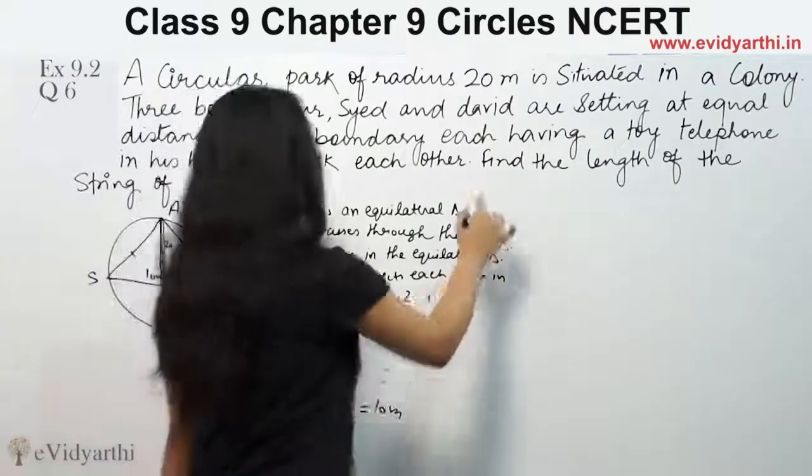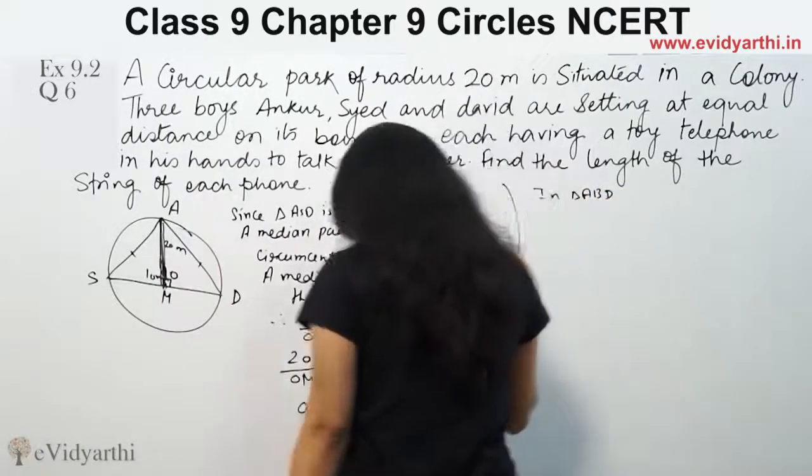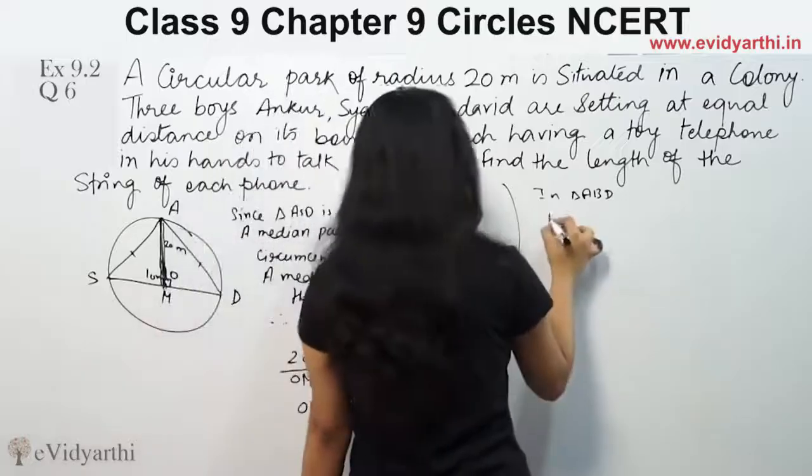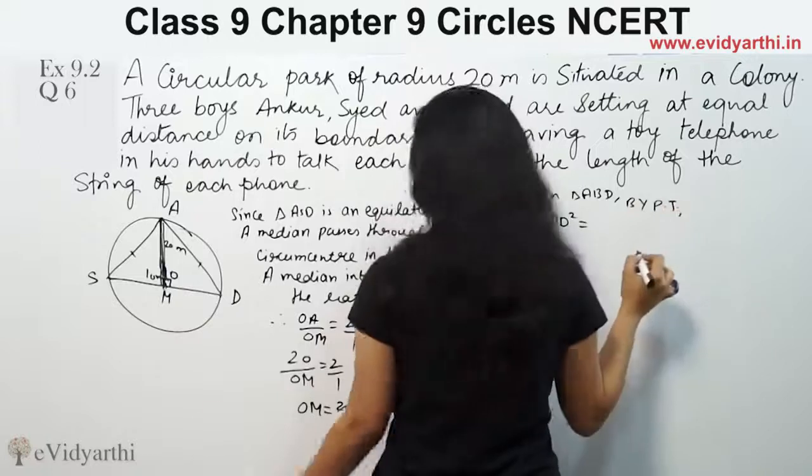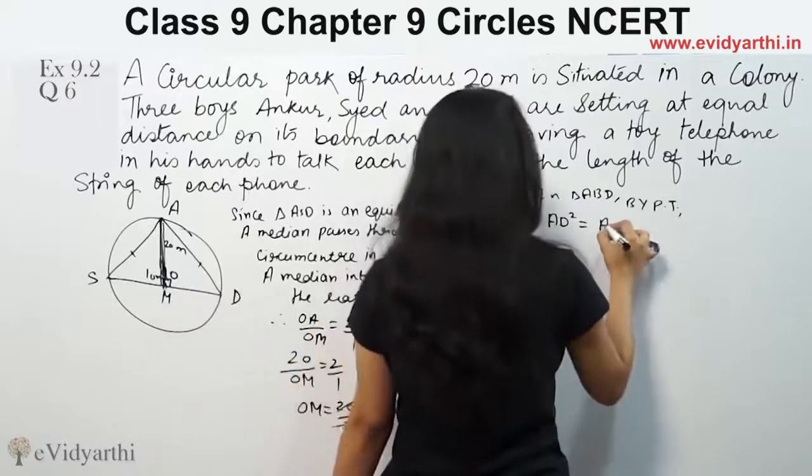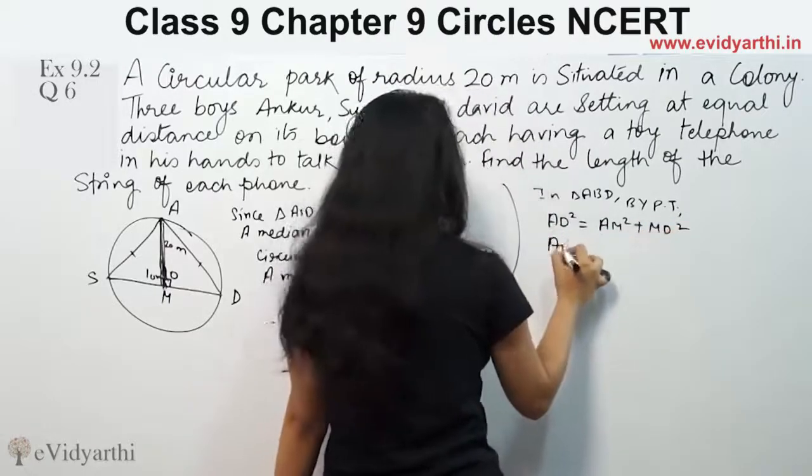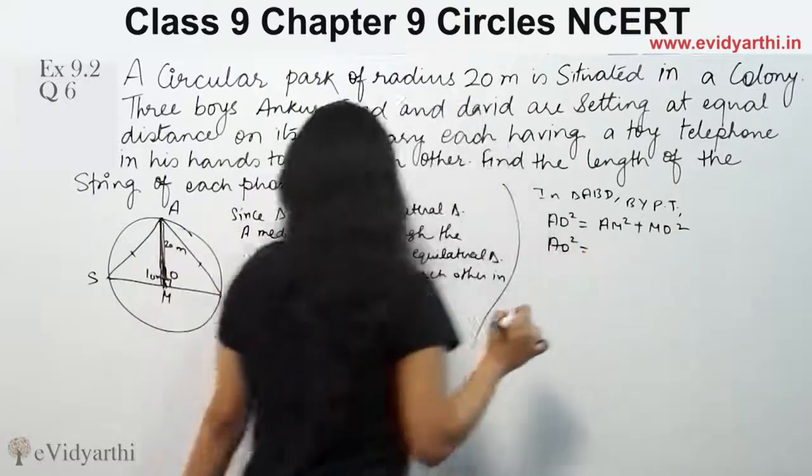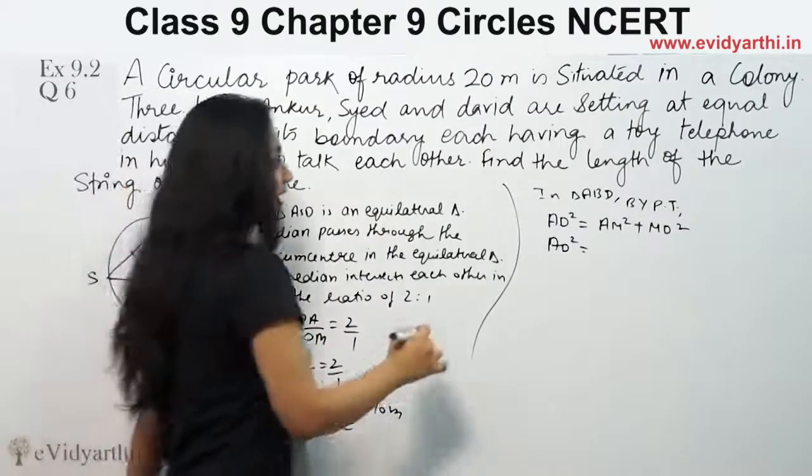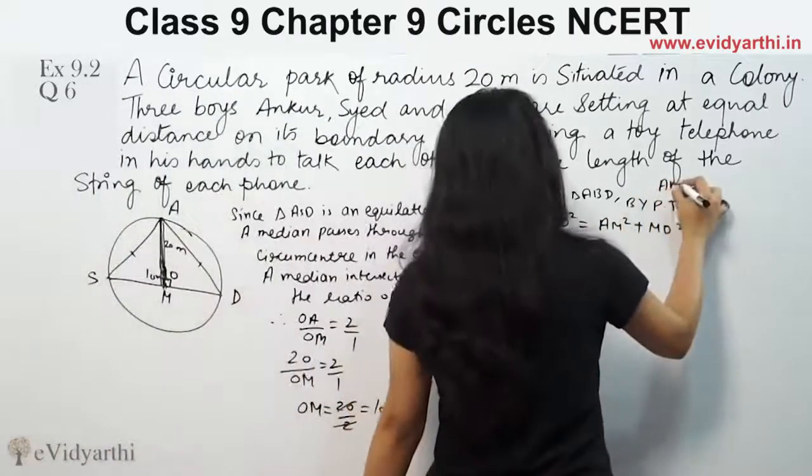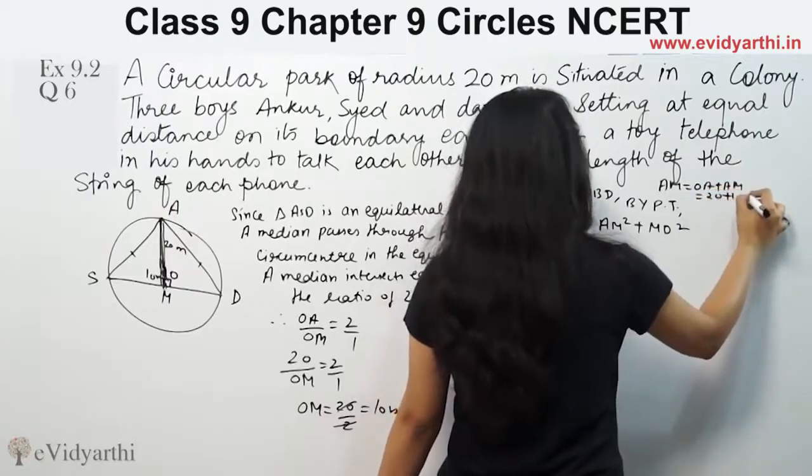So in triangle AMD, the hypotenuse is AD. By Pythagoras theorem, AD square equals MD square plus AM square. So we have to find AD's length. For AM - we have OM here, and OA's length is 20. So from here AM's length will be: AM equals OA plus OM, that means 20 plus 10 equals 30 meters.